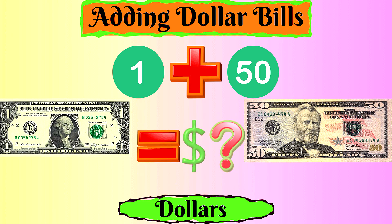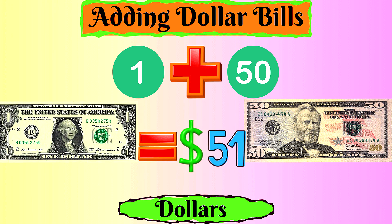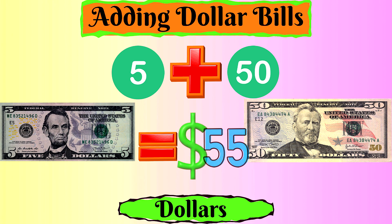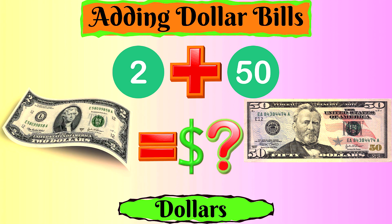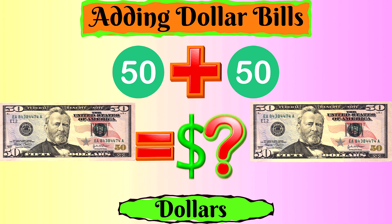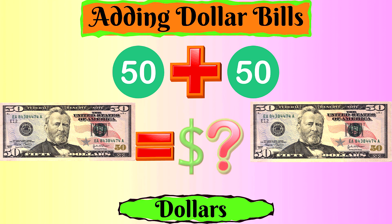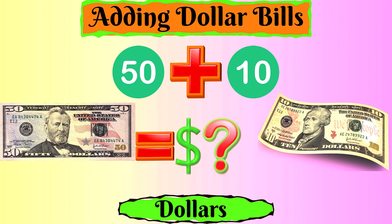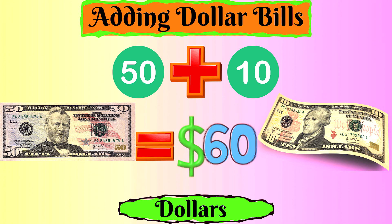Fifty dollars. One dollar plus fifty dollars equals fifty-one dollars. Two dollars plus fifty dollars equals fifty-two dollars. Fifty-five dollars plus ten dollars equals sixty dollars. Fifty dollars plus twenty dollars equals sixty dollars.